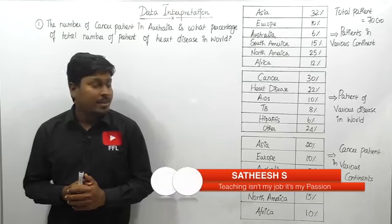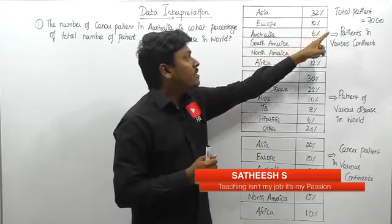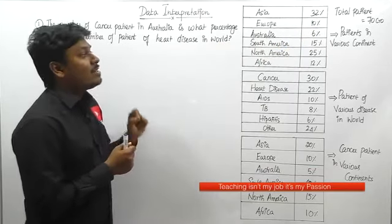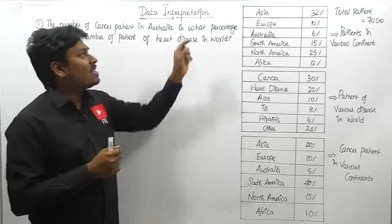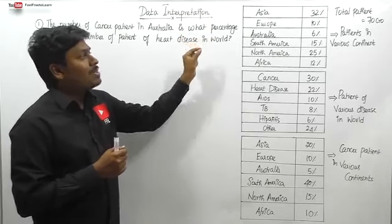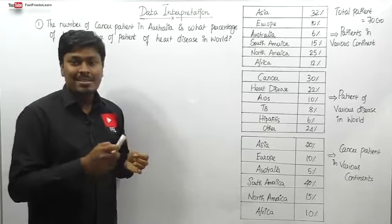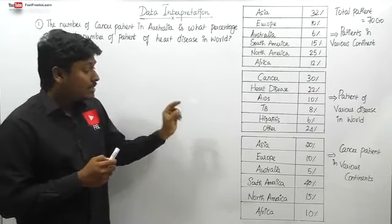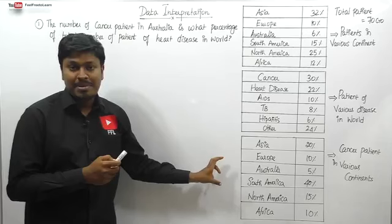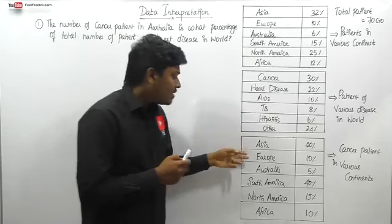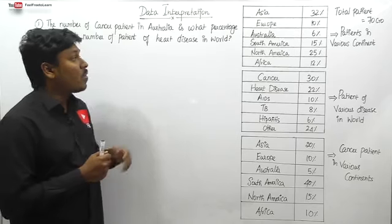Let me move on to DI number seven. Friends, here they have given three table charts. At the top, the total patients are 70 crores. The first table chart shows patients in various continents: Asia has 32%, Europe is 10%, Australia is 6%. The second chart shows various diseases in the world — cancer, AIDS, TB, and other diseases. The third chart shows cancer patients in various continents.